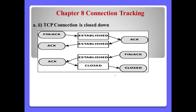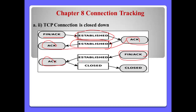TCP connection close-down. When we make a connection using TCP, we use three-way handshake. But when we close down this connection, we need four ways. First, the client sends FIN and ACK to the server. The server replies with ACK — we say the state is 'Established'. Then the server also sends FIN and ACK to the client. If the client sends ACK to the server, this state will be 'Closed'.